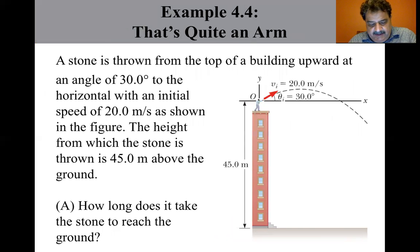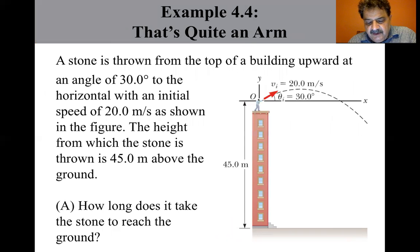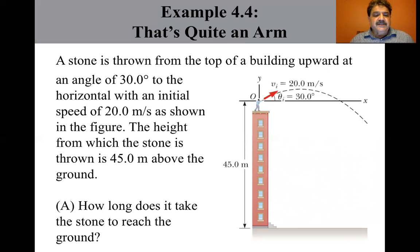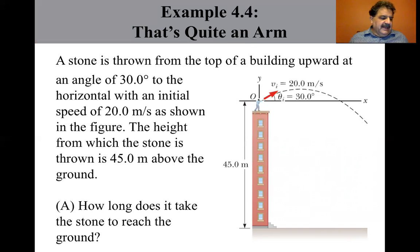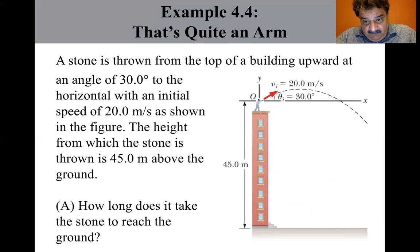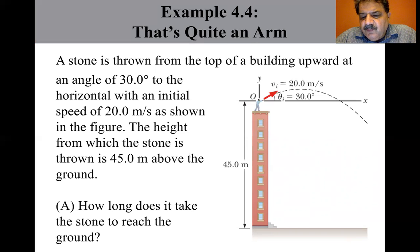Here's another problem. A stone is thrown from the top of a building upward at an angle of 30 degrees to the horizontal with an initial speed of 20 meters per second. The height from which the stone is thrown is 45 meters above the ground. How long does it take the stone to reach the ground? This is not one of those problems where the initial height equals the final height. The stone is modeled as a particle under constant acceleration in Y and constant velocity in X.